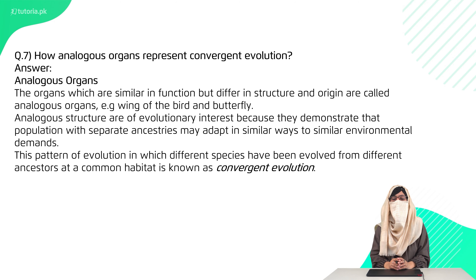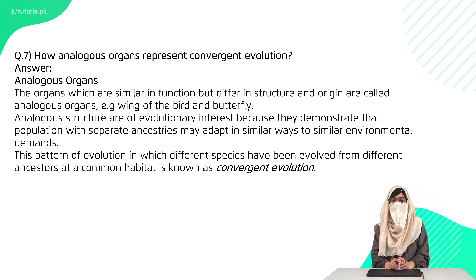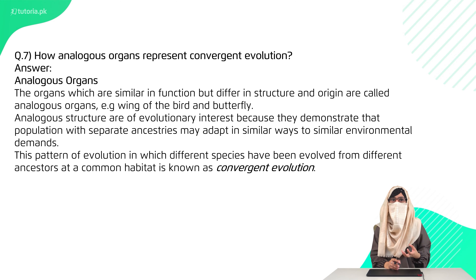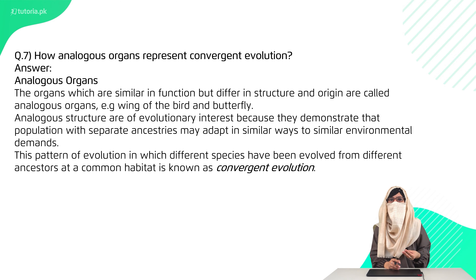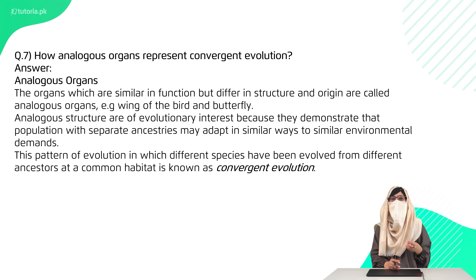Question 7 is: how do analogous organs represent convergent evolution? Analogous means the function is the same but the structure is different. In convergent evolution, animals converge in one environment, face the same challenges, and adapt similarly. But because each organism's gene pool is different, they evolve differently. For example, bats are mammals and use their skin to form wings, while butterflies are insects and use chitin to form wings.